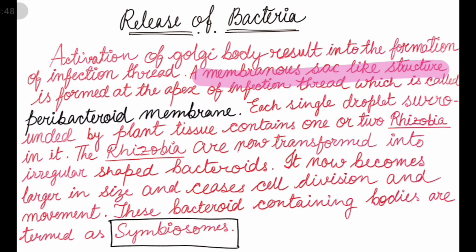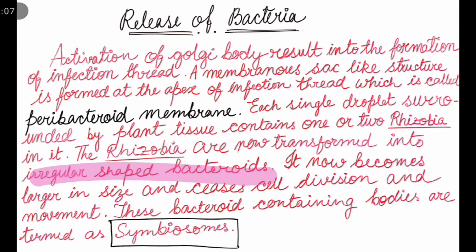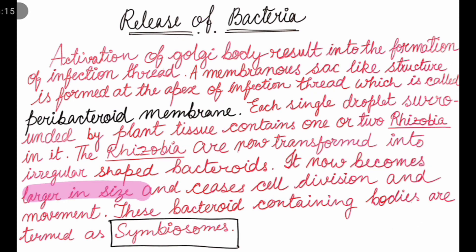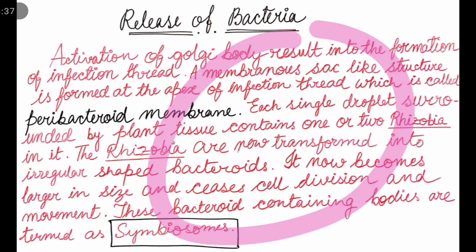The infection thread forms a peribacteroid membrane — a sac-like structure — at the apex within the root hair. Single droplets surrounded by plant tissue contain one or two rhizobia. The rhizobia are then transformed into irregular-shaped bacteroids, which become larger in size and cease cell division. These bacteria-containing sac-like structures enclosed by the peribacteroid membrane are called symbiosomes.